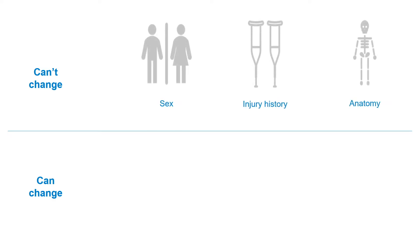Let's take a closer look at the risk factors for adolescent musculoskeletal injury. The first category includes several things that we cannot change about a person, such as their sex, their injury history, and their anatomy, such as the size and shape of their bones or ligaments. These are often referred to as non-modifiable risk factors because there is essentially nothing that we can do to change them.